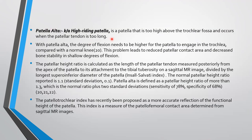Patella alta, or high-riding patella, occurs when the patella is too high above the trochlear fossa because the patellar tendon is too long. With patella alta, a greater degree of flexion is needed for the patella to engage in the trochlea compared with normal. This leads to reduced patella contact area and decreased bony stability in shallow degrees of flexion. The patella height ratio (Insall-Salvati index) is calculated as the length of the patellar tendon divided by the longest superior-inferior diameter of the patella. The normal ratio is 1.1 ± 0.1, and patella alta is defined as a ratio greater than 1.3.